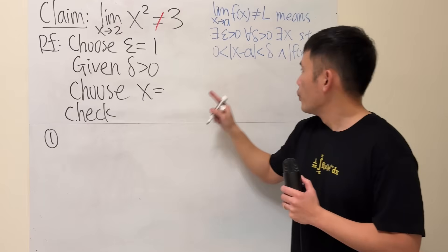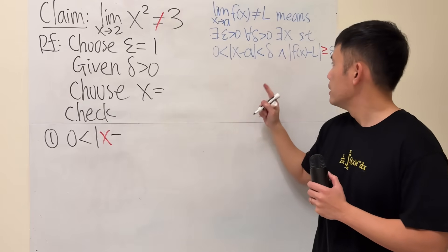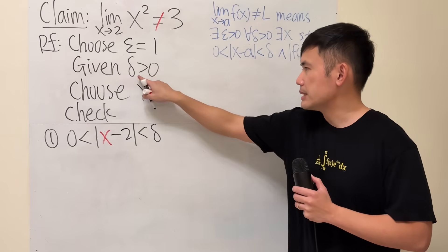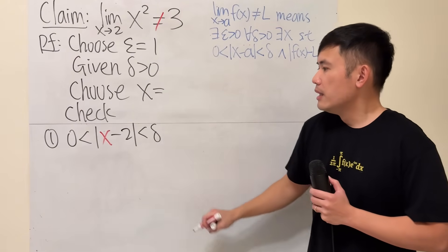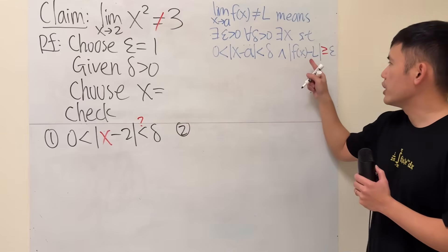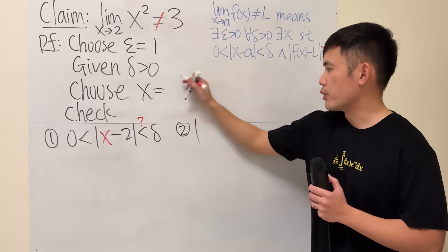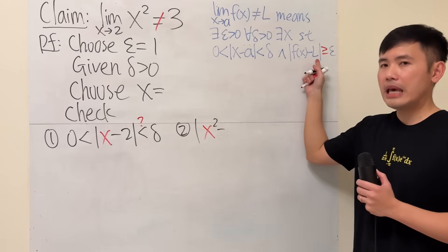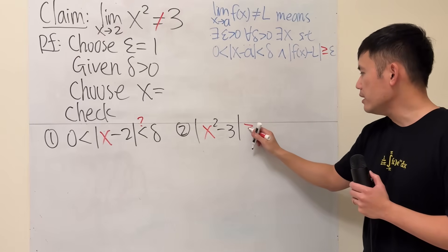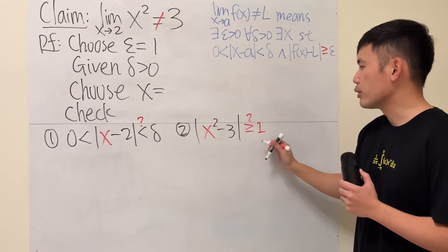Number one. We need to make sure that whatever this x is, it has to be in between of 0 and delta. The a in our case is 2. And the delta is just any delta. So it's not a specific number or expression in this case. Is this true? I don't know yet. So I'll put a small question mark. Now, second part is that we have to check this. We have our function. Our function is x squared. x is this expression that I don't know yet. I'll just put on x squared here. Minus the L, the fake limit, which in this case is 3. And then later on, I hope to show that this is greater than or equal to the epsilon that I picked earlier, which is 1. Is this true though? I don't know yet. This is what I wish to show.